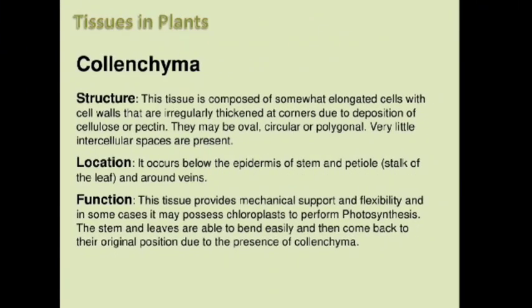The second type of simple permanent tissue is collenchyma. Its structure is composed of somewhat elongated cells with cell walls irregularly thickened at corners due to deposition of cellulose or pectin. They may be oval, circular, or polygonal, with very little intercellular spaces. It occurs below the epidermis of the stem and petiole or stalk of leaves and around veins. This tissue provides mechanical support and flexibility, and in some cases may possess chloroplasts to perform photosynthesis. The stem and leaves are able to bend easily and return to their original position due to the presence of collenchyma.